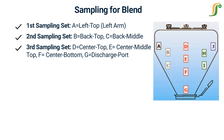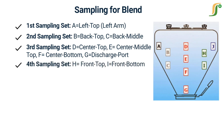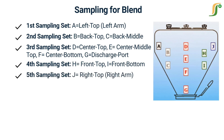Fourth sampling set: take sample from location H, which is front top, and location I, which is front bottom. Fifth sampling set: take sample from location J, which is right top of the blender.